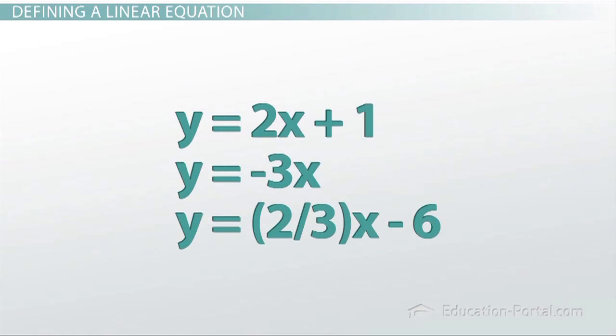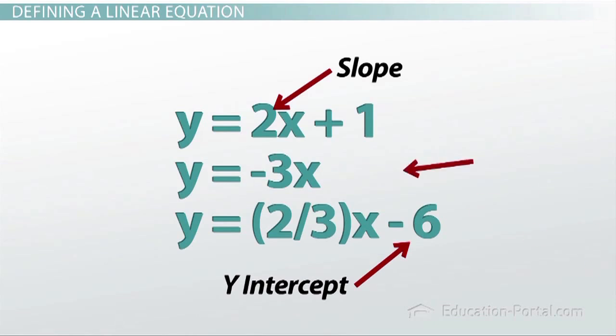In each of these equations, the number in front of the x represents the slope, or how much it's moving by, and the number on the end represents the b value, where it begins, or the y-intercept. If there is no number after the x, that implies that the y-intercept is zero.